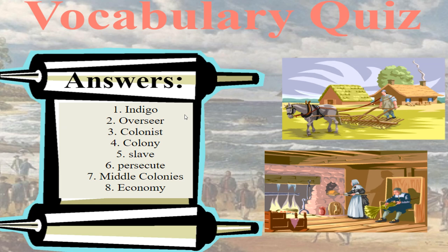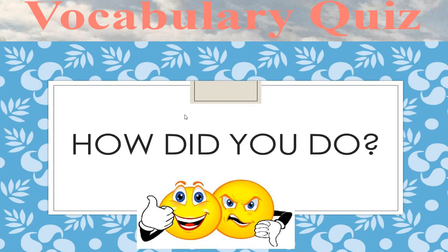Welcome back. Here are your answers: number one, indigo; number two, overseer; number three, colonist; number four, colony; number five, slave; number six, persecute; number seven, the middle colonies; number eight, economy. So those are the answers from your vocabulary quiz. How did you do — thumbs up, thumbs down, or thumbs in the middle if you did so-so?